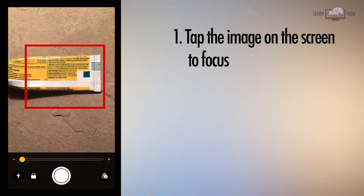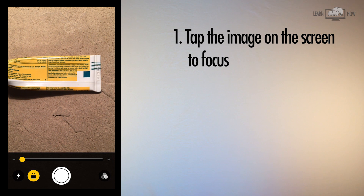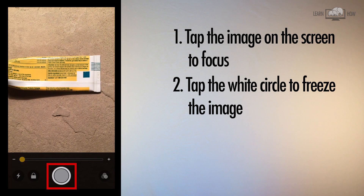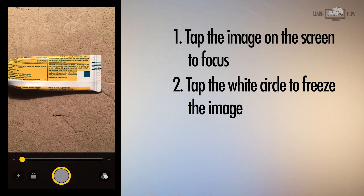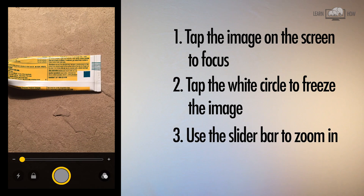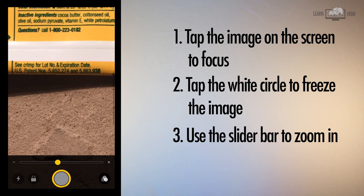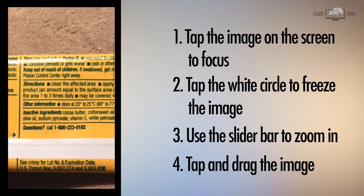Tap the image on the screen to focus. The lock symbol will lock the focus. You can freeze an image on the screen by pressing the large circle. After freezing an image, you can zoom in further. You can also drag the image on the screen.